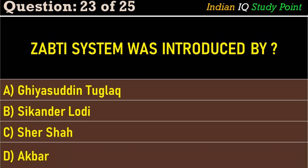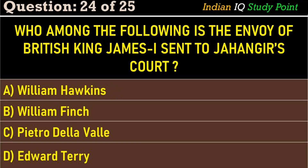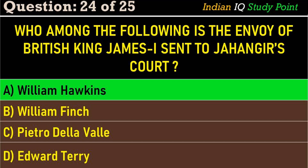Coming to the next question: who among the following is the envoy of British King James I sent to Jahangir's court? Option A. William Hawkins, B. William Finch, C. Pietro Della Valle, D. Edward Terry. And the correct answer is Option A. William Hawkins.